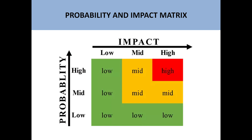Let me give you a simple example of the Probability and Impact Matrix. On the vertical axis we have probability — the chances of occurrence of an event or risk. On the horizontal axis we have the impact of that risk on the project. Every probability level will have low, medium, and high categories. Similarly, the impact will also be low, medium, and high. For example, if the probability of a risk is very high but the impact is low, we consider it as low priority.